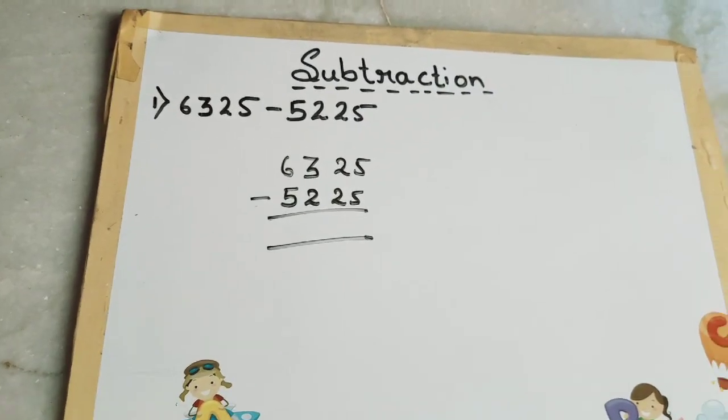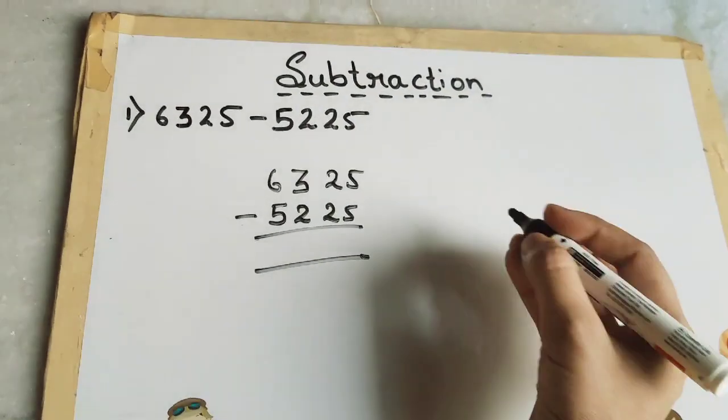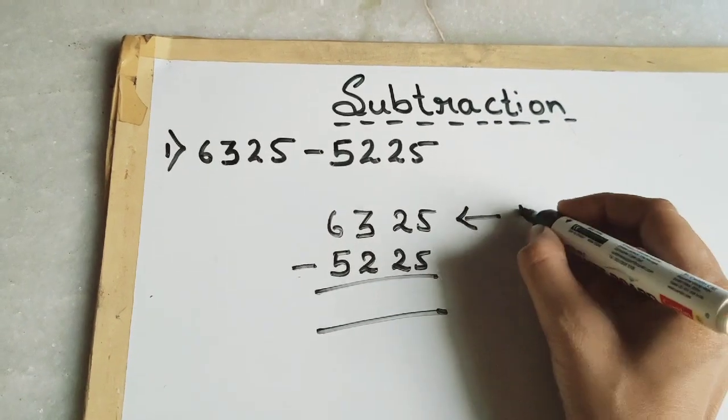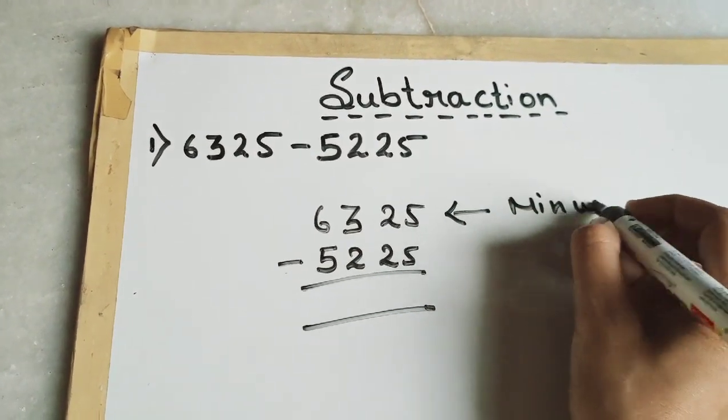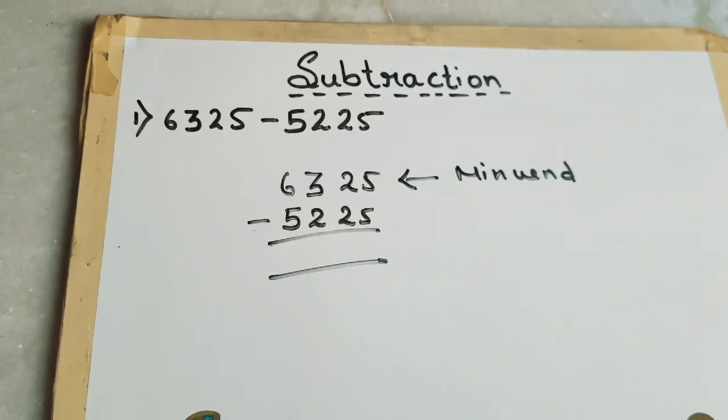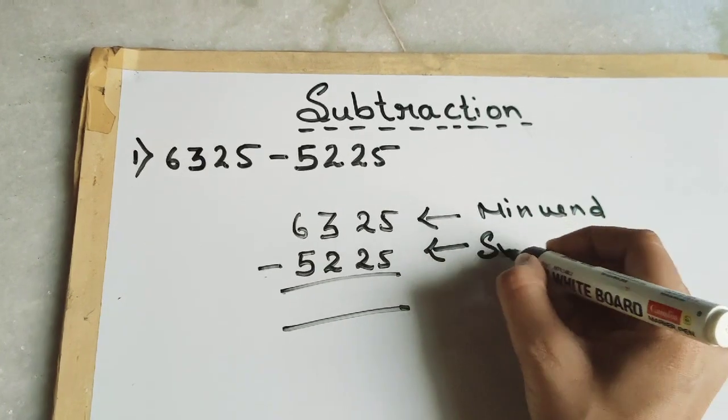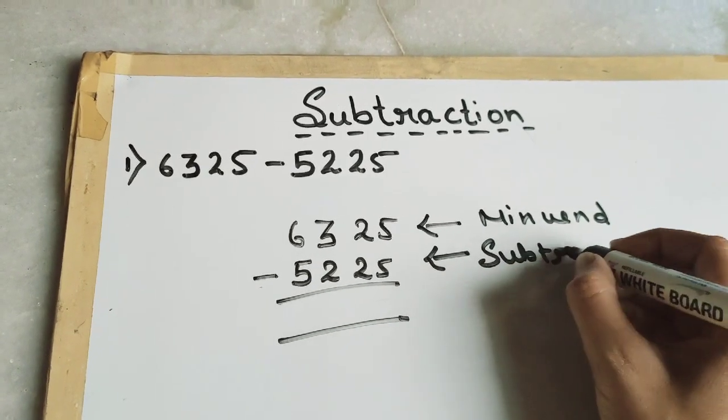Before subtracting, I am going to tell you that the number from which you are subtracting is called the minuend, and the number which you are subtracting is called the subtrahend.